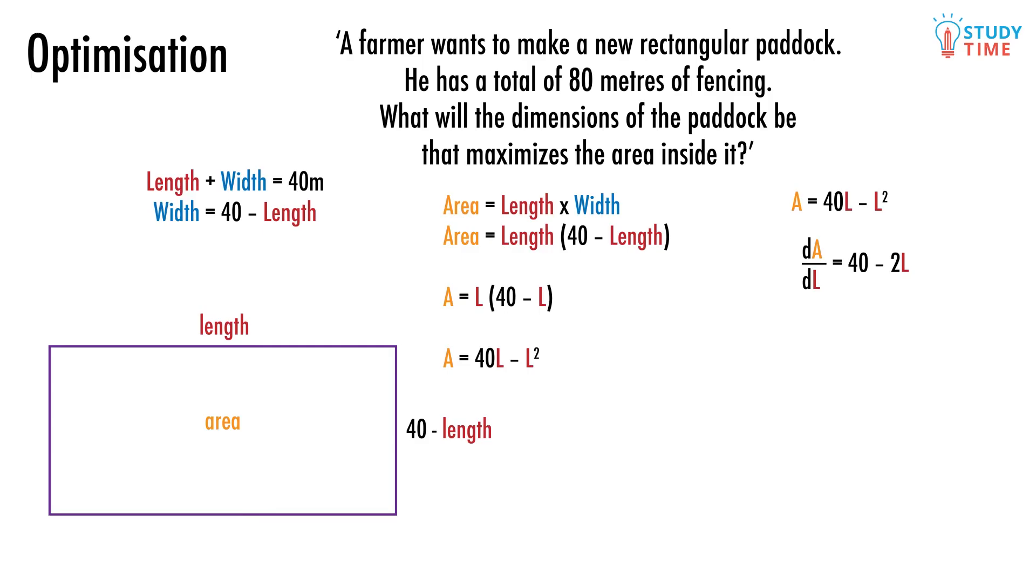Now we need to replace the gradient dA/dL with a zero and solve for L. 40 minus 2L equals 0, 2L equals 40, L equals 20. Fantastic. The great news is that we now know that in order for the area of the paddock to be as large as it could possibly be, the length needs to be exactly 20 meters.